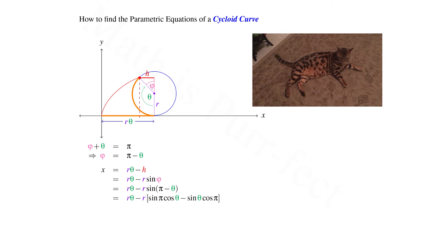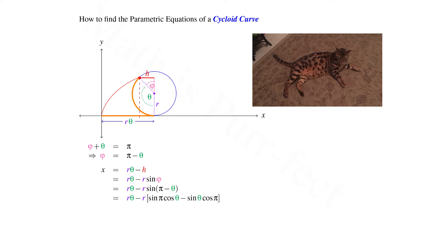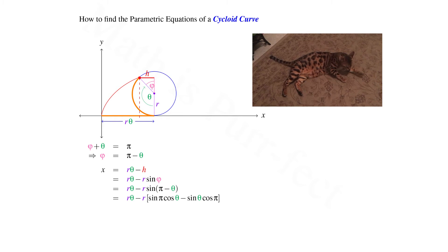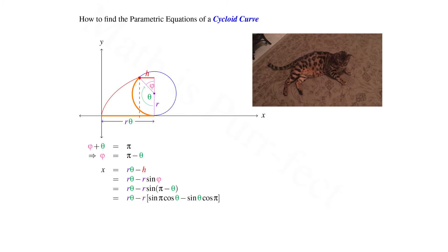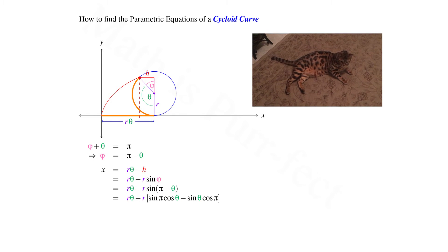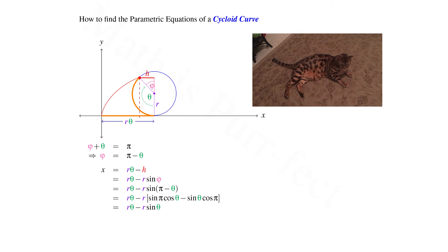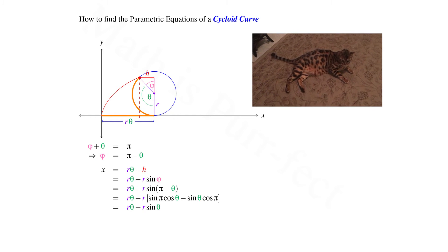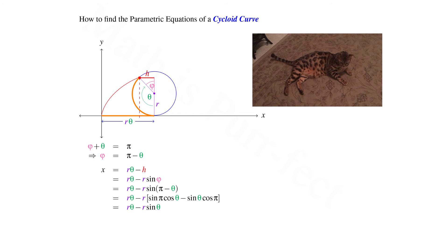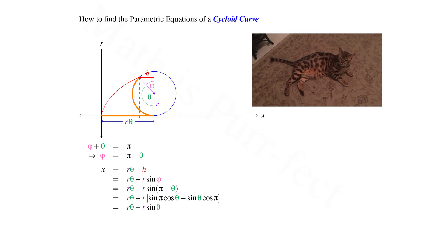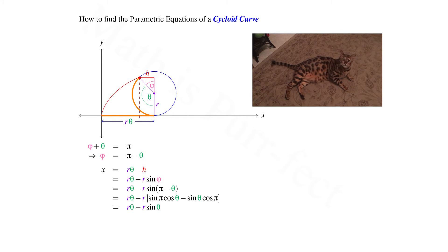Using the difference formula for sine, we have that our x-coordinate now becomes r theta minus r times the quantity sine pi times cosine theta minus sine theta times cosine pi. But sine of pi is 0, and cosine of pi is negative 1. Hence, this simplifies to r theta minus r times sine theta.